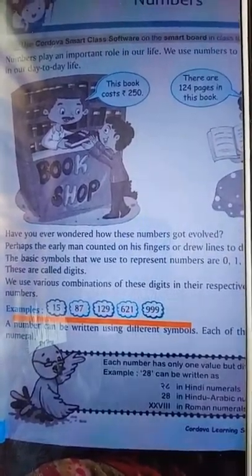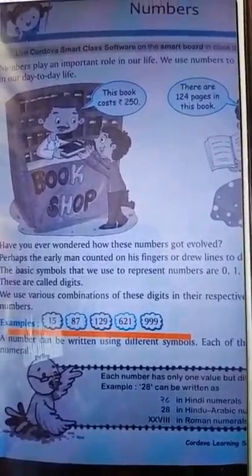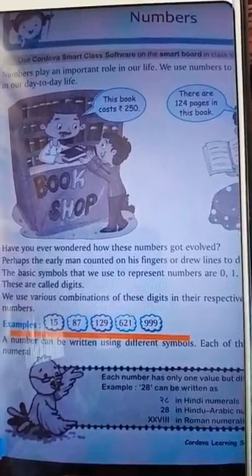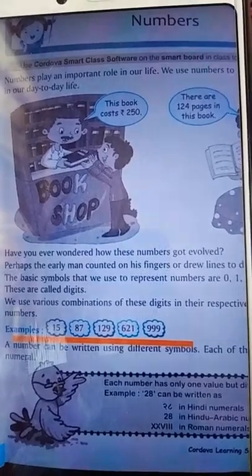Look at this picture. There are some numbers. 15, 87, 129, 621, 999. What we call it? These are numerals.